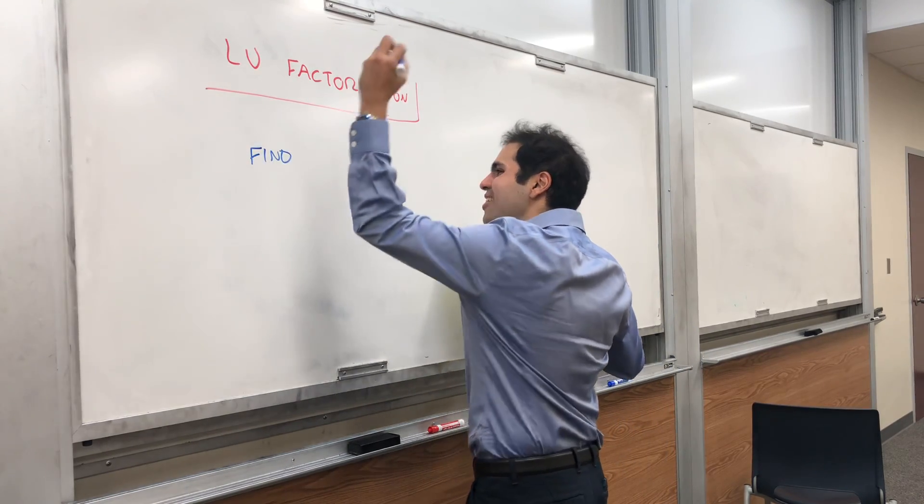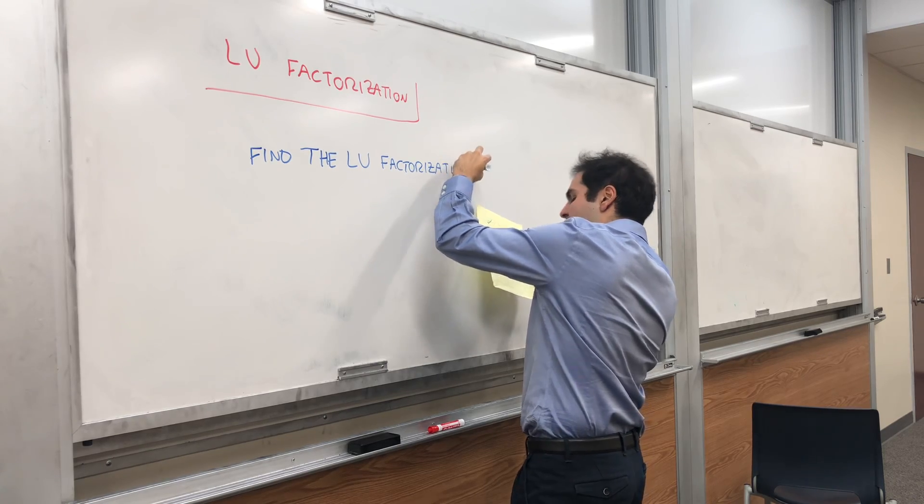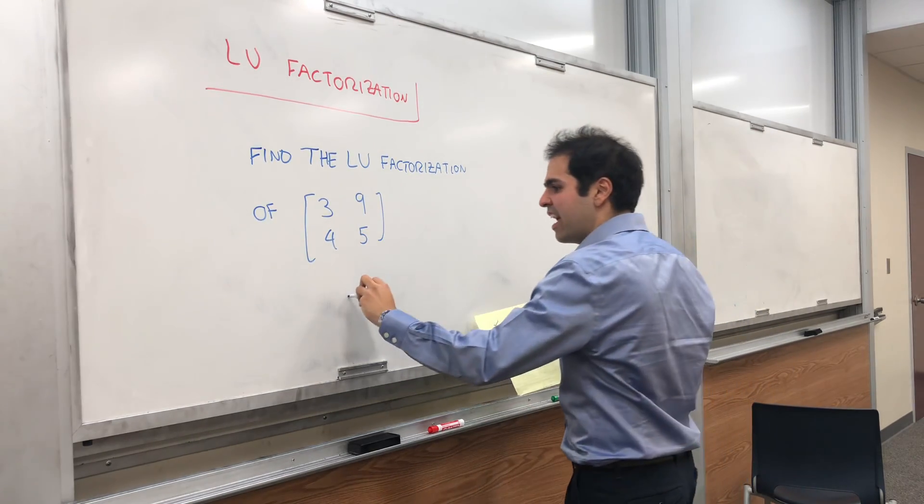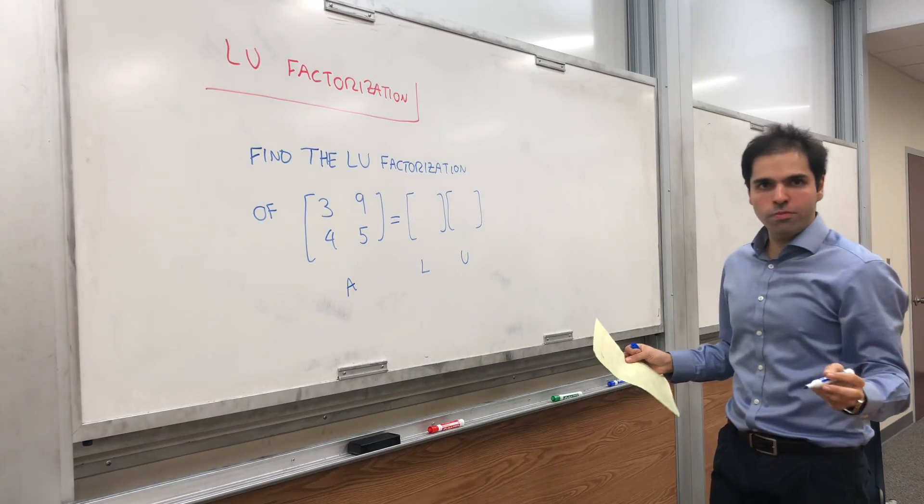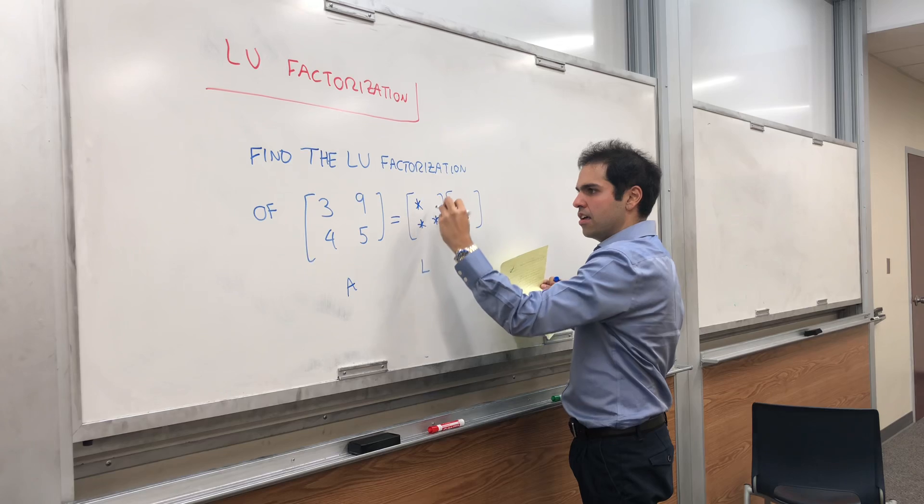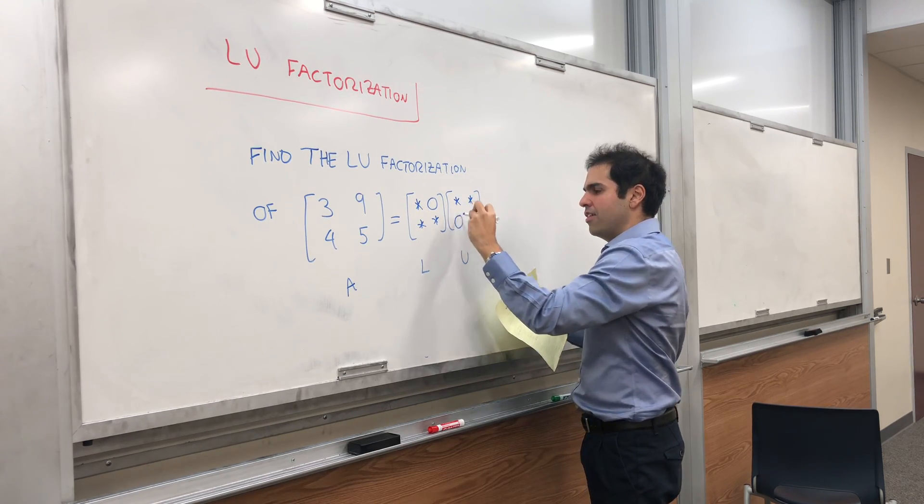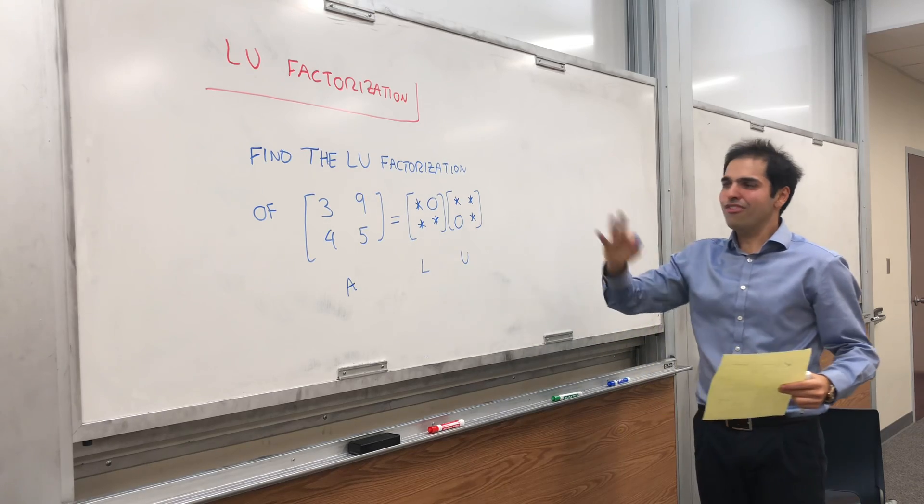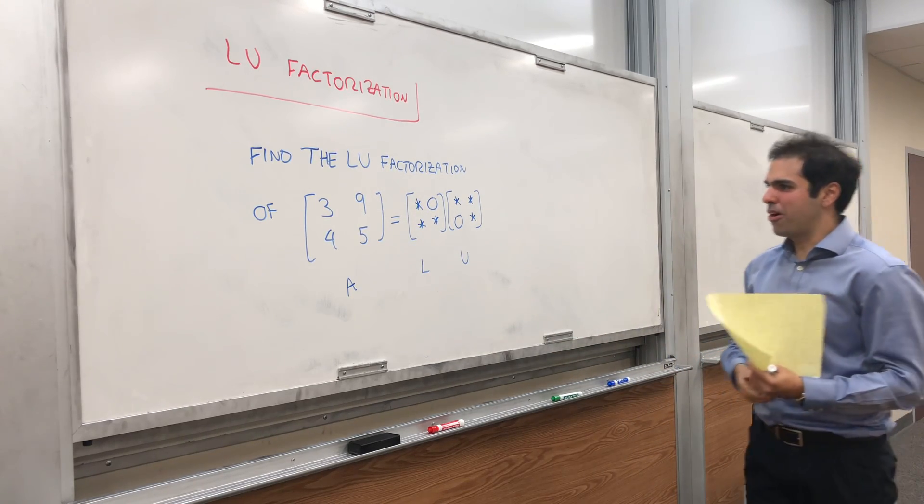Let's find the Lu factorization of the matrix 3, 9, 4, 5. So this is the matrix A and what do we want to do? We would like to write it as a product of two very special matrices, one which is L as in lower triangular, where the terms above the diagonal are zero, and upper triangular, where the entries below the diagonal are zero. And of course you can generalize this very easily to three by three, four by four, etc. matrices.